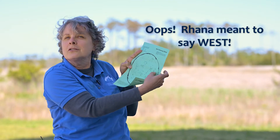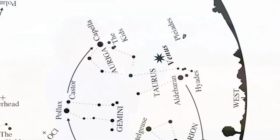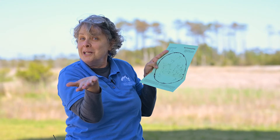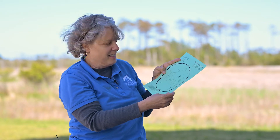For example, as we look in the east, there's going to be a very bright object indicated by a big star-shaped pattern — that's Venus. It's not a star, it's a planet, but we can see it in the night sky.